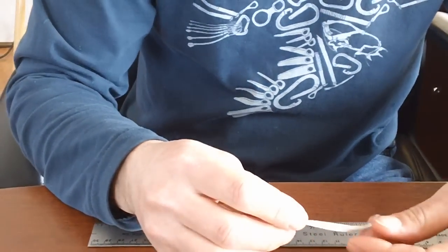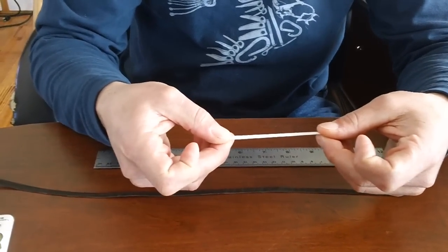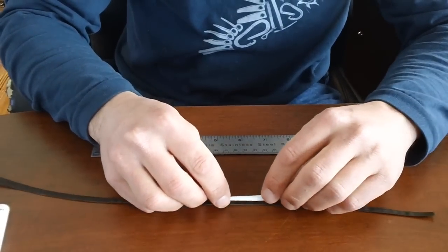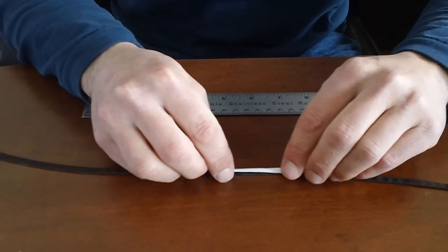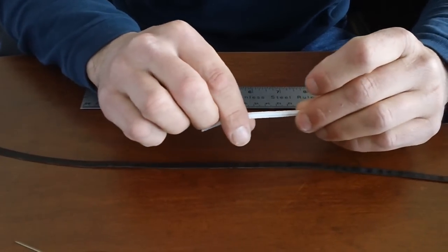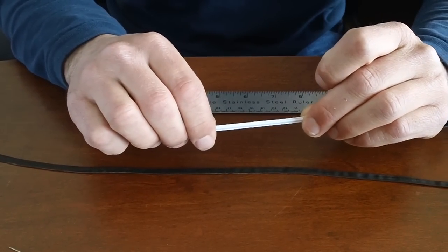You're going to need to get elastic material. This is just regular elastic that I got at the sewing store. You want it a little less than a quarter inch so it can fit inside the tubing and slide easily inside of it. If you get quarter inch elastic, then you'll have a tough time fitting it inside the tubing.